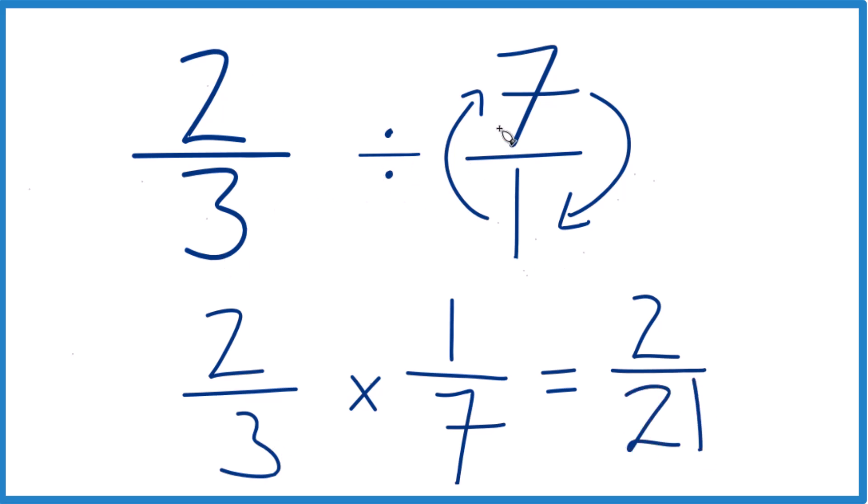So two-thirds divided by seven, or you could say two-thirds times one-seventh, that's two twenty-firsts. That's it.